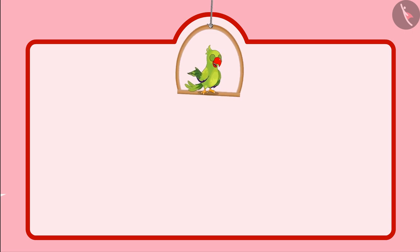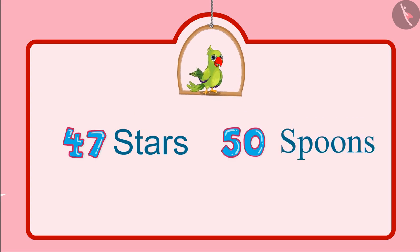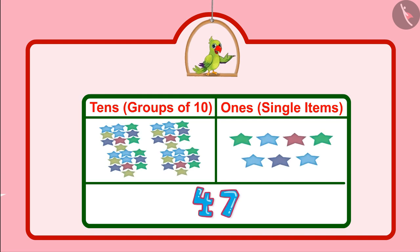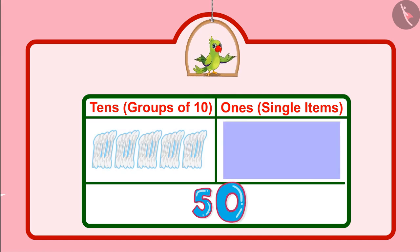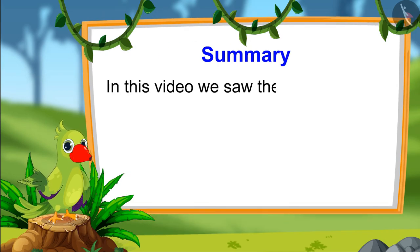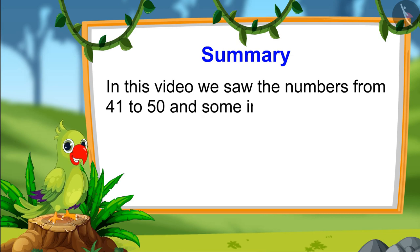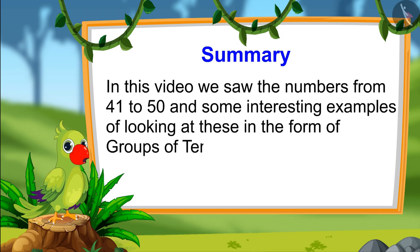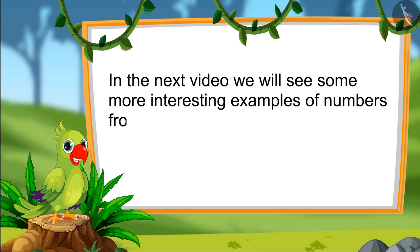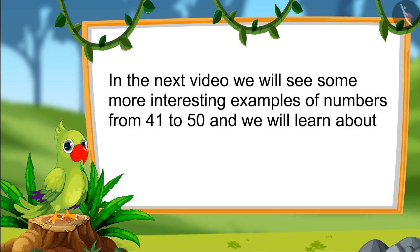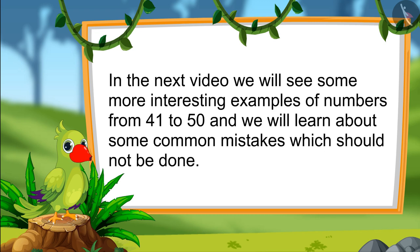Children, you just saw that Pinky and Chotu had 47 stars and 50 spoons. Can you tell how many groups of 10 and how many single units are there in these? There are 4 groups of 10 and 7 single units in 47. And there are 5 groups of 10 in 50. There are no separate single units in 50, and that's why 0 single units. So that's it for today. In this video, we saw the numbers from 41 to 50 and some interesting examples of looking at these in the form of groups of 10 and single units. In the next video, we will see some more interesting examples of numbers from 41 to 50 and we will learn about some common mistakes which should not be done. Till then, bye children.